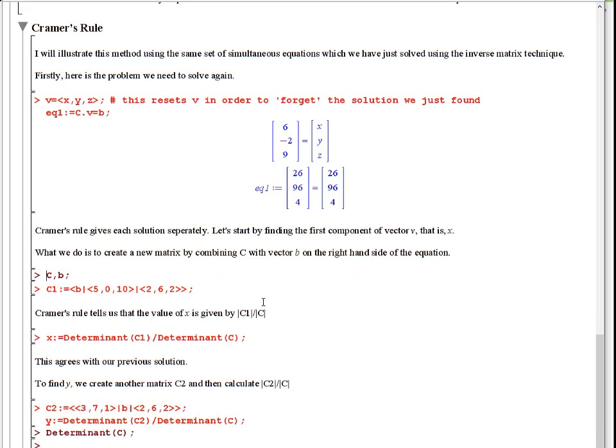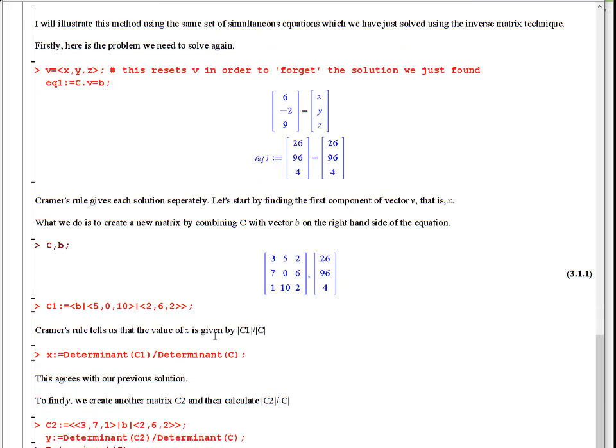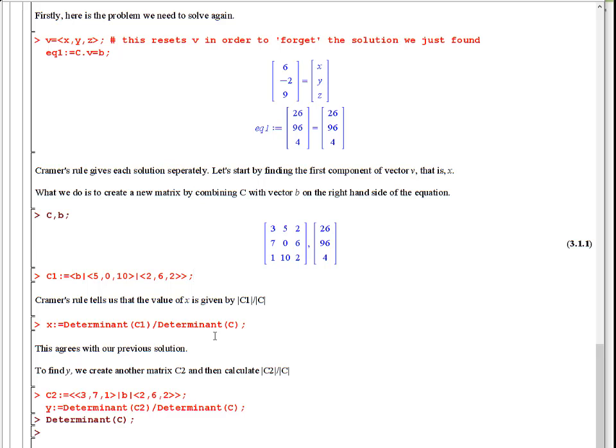So Cramer's rule gives you each component separately, x, y, and z, which on one side is a bad thing because you have to do it three times, on the other side is a good thing, because sometimes you only want to know one of those variables, and you can just isolate exactly that one.